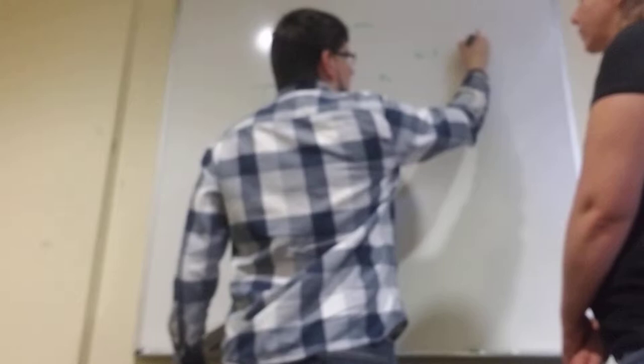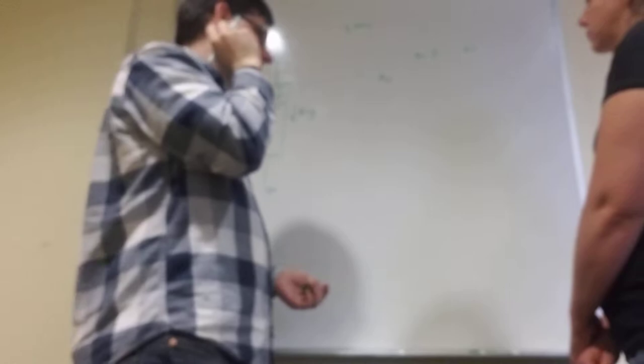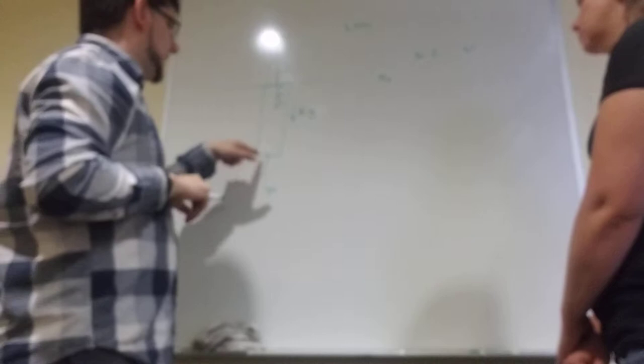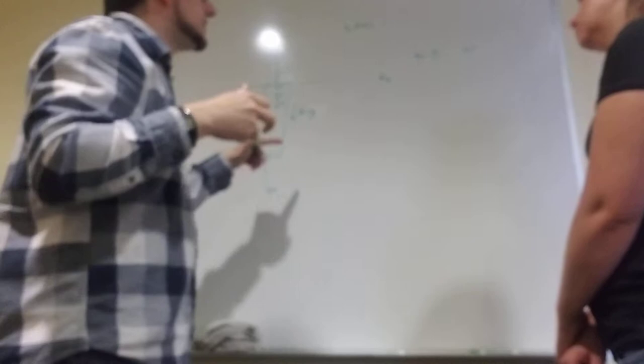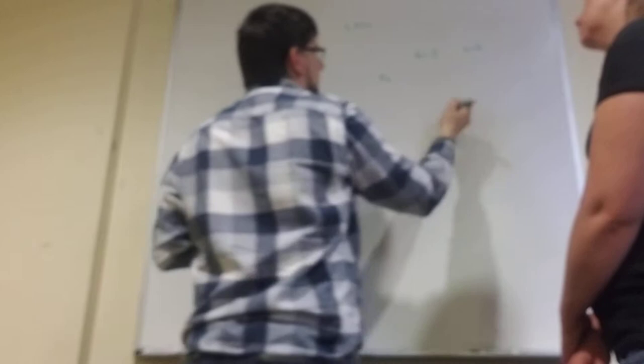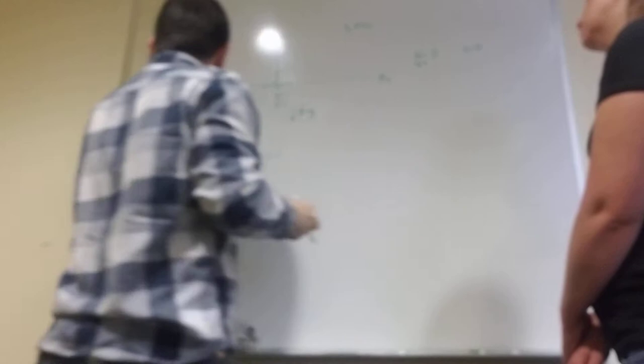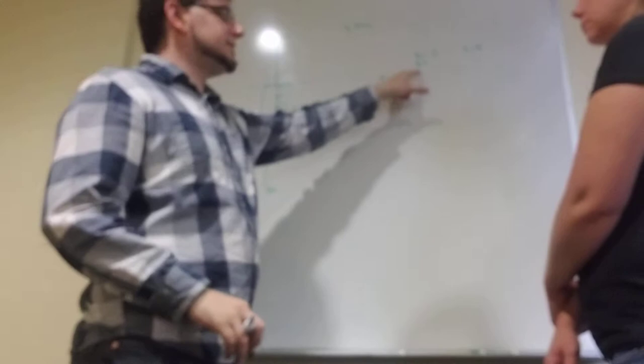And then S1, or you could also call it S final, is going to be down here. It's where it stops. And that is going to be at the bottom, or rather the top, of the tower. So, S naught, or excuse me, S1 is going to be the height of the tower. Right? And then, we also want to know our velocities.